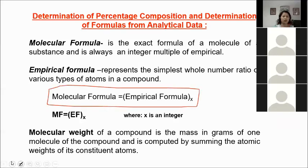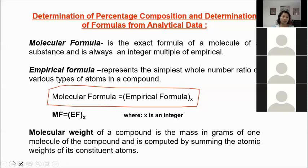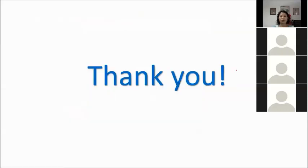In chemistry, we can use 'molecular weight' and 'molecular mass' interchangeably, though in physics mass is not equal to weight. Molecular weight or molecular mass of a compound is the mass in grams of one molecule of the compound and is computed by summing the atomic weights of its constituent atoms. That's all for today.